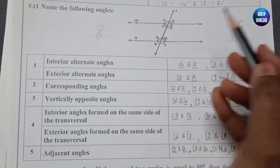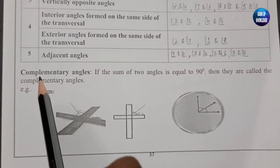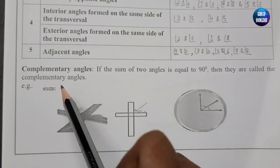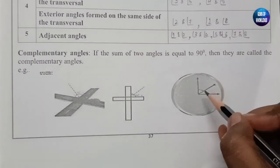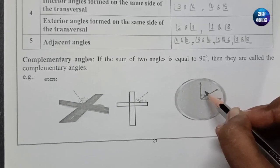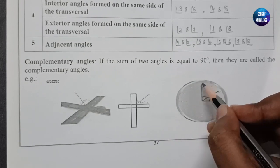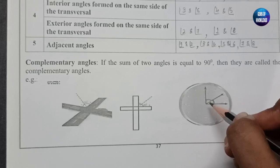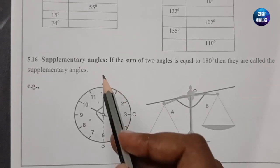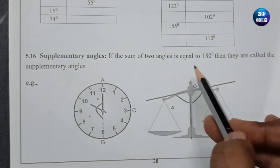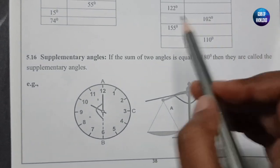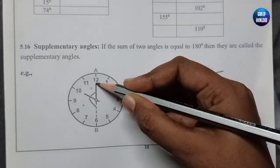Complementary angles: if the sum of two angles equals 90 degrees, they are called complementary angles. For example, if a right angle is divided into two parts, and those two parts add up to 90 degrees, those are complementary angles. Supplementary angles: if the sum of two angles equals 180 degrees, they are called supplementary angles — like two angles on a straight line that together make 180 degrees.